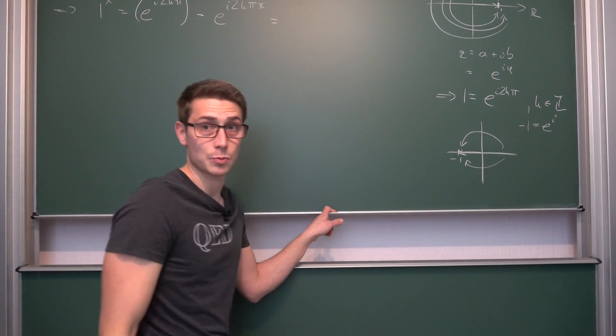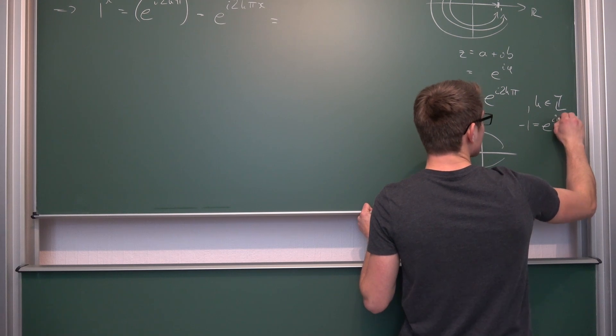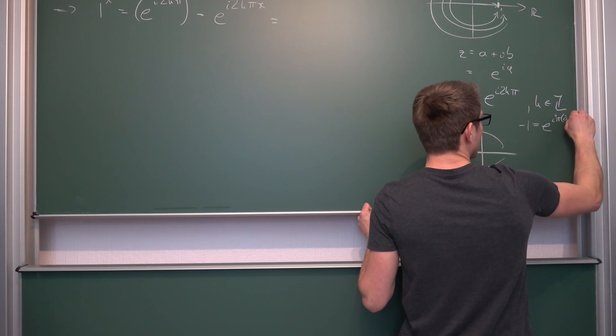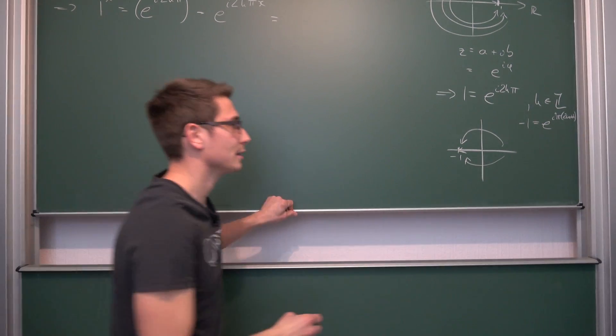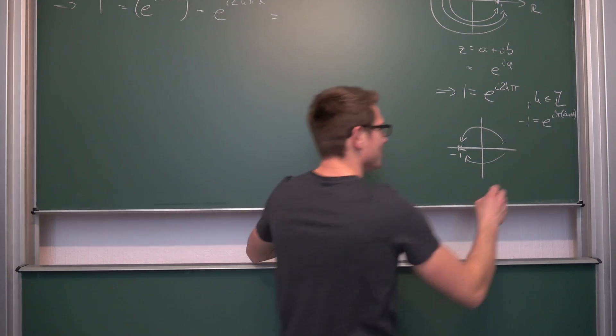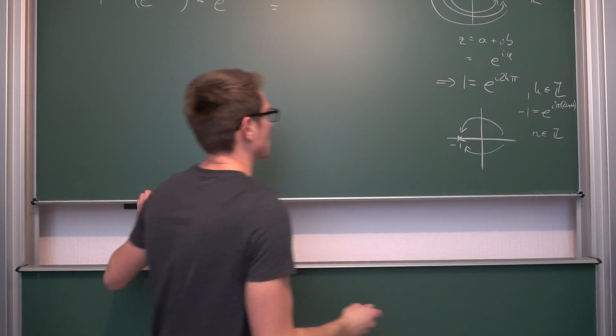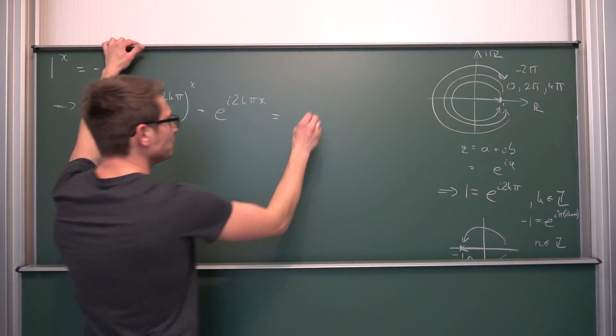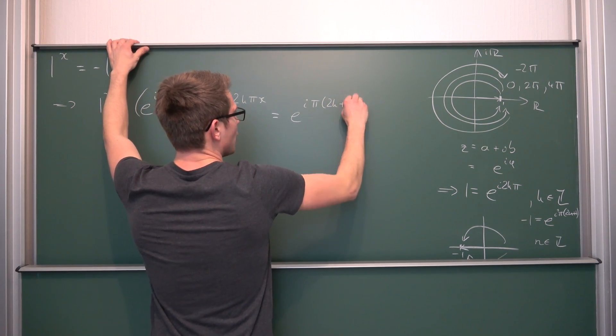Meaning, the number negative 1 can be expressed as a complex number at all times as i times π times (2n+1), all the odd positive and negative integers, where n is the element of the positive and negative integers once again. So we can plug this into here: e to the iπ(2n+1).